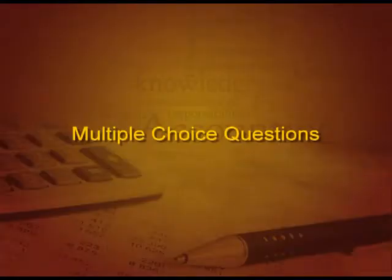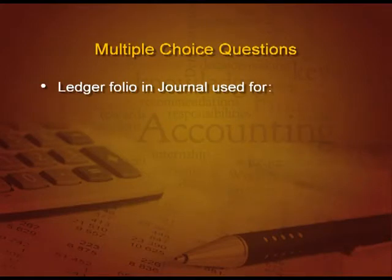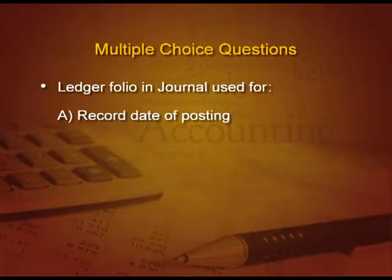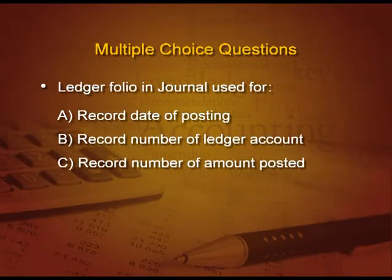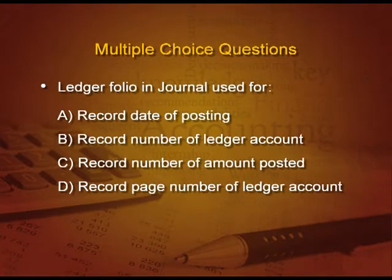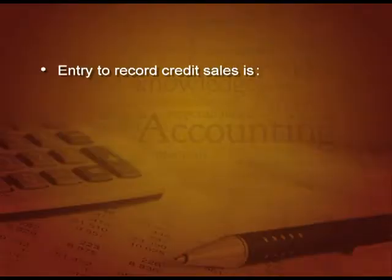Let us understand a few things with the help of multiple choice questions. Ledger folio in the journal is used for what purpose? A: record the date of posting, B: record the number of ledger accounts, C: record the number of amount posted, and D: record the page number of ledger account. The answer is D — we record the page number of the ledger account.